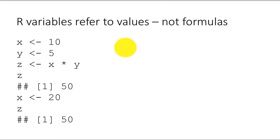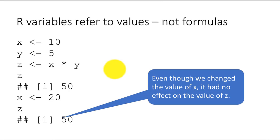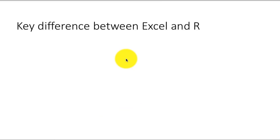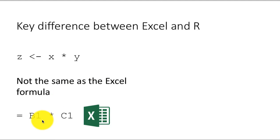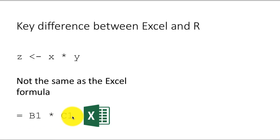This is unlike what we know to be true in Excel, where you put a formula into a cell, and then whenever you change any value on which the formula depends, Excel will recalculate. But that doesn't happen in R. So that's a big difference. This is not the same as the Excel formula B1 times C1. So assuming B1 contains whatever value x contains and C1 contains whatever value y contains, and in some other cell you put the formula equals B1 * C1 — if you subsequently go and change B1, then the cell will recalculate for the new value. That's not happening in R.